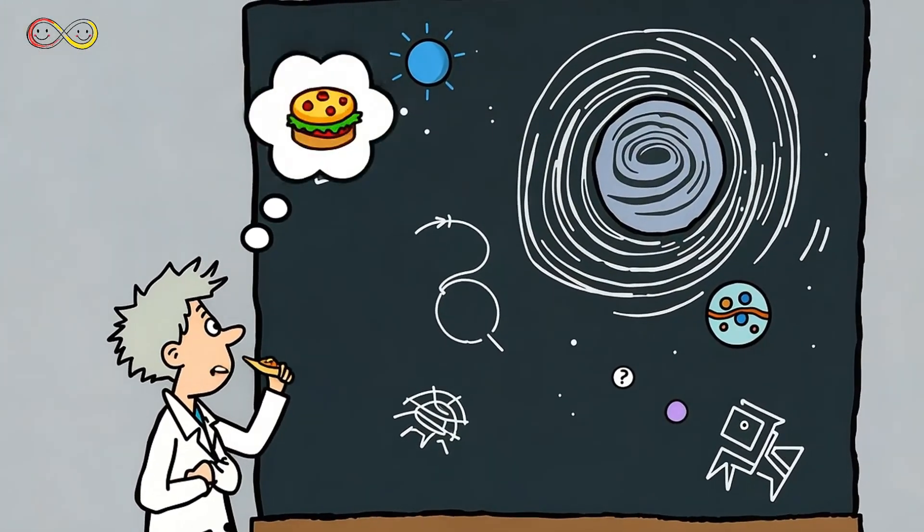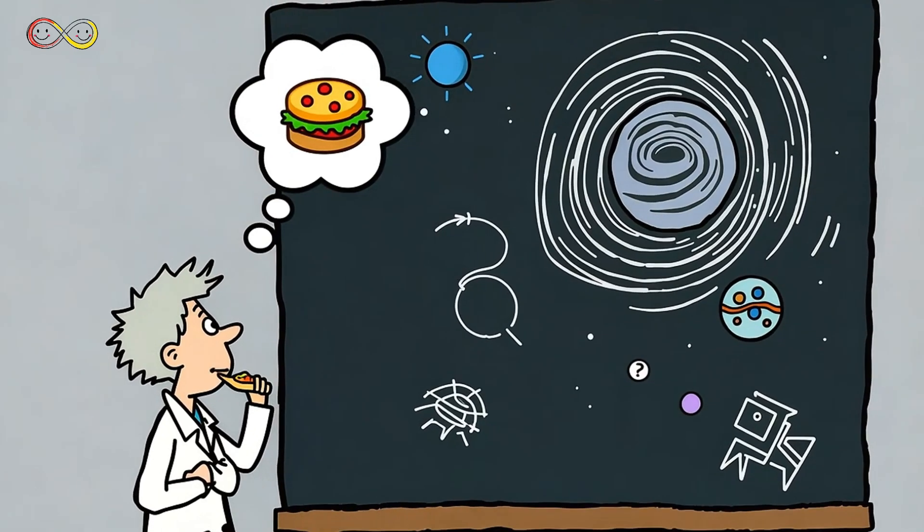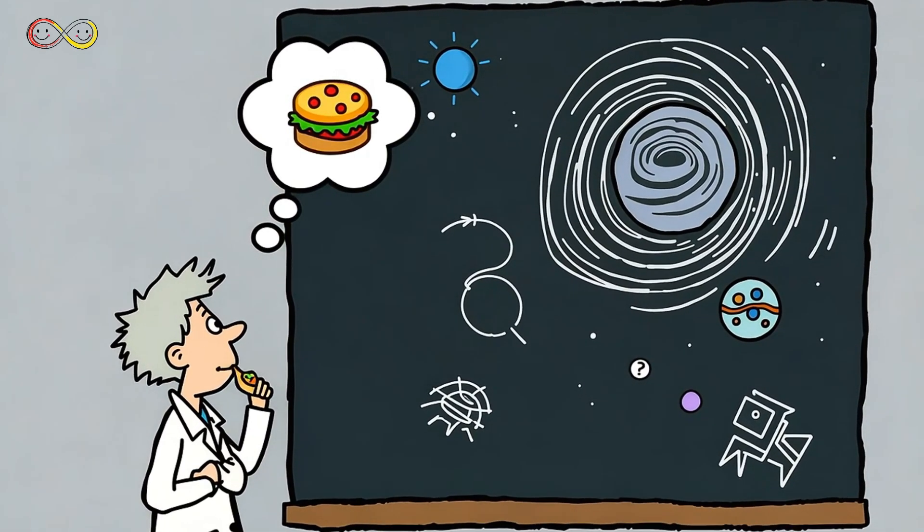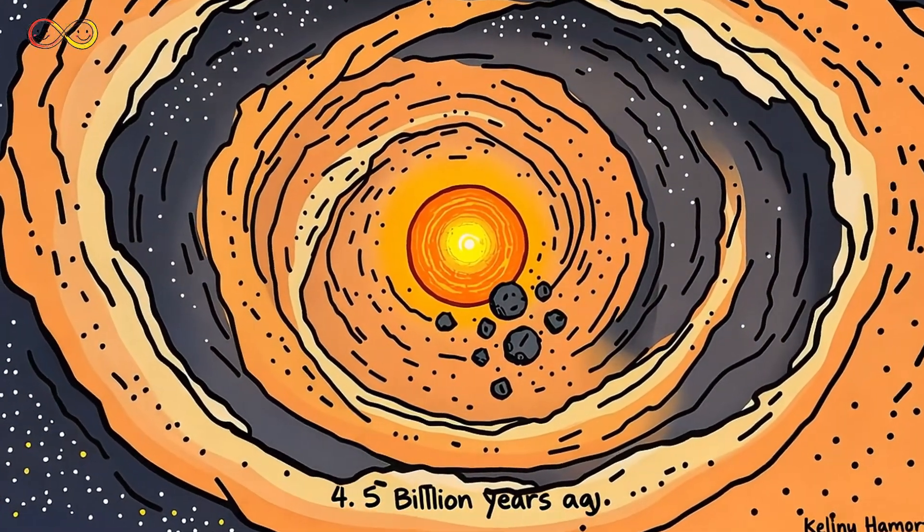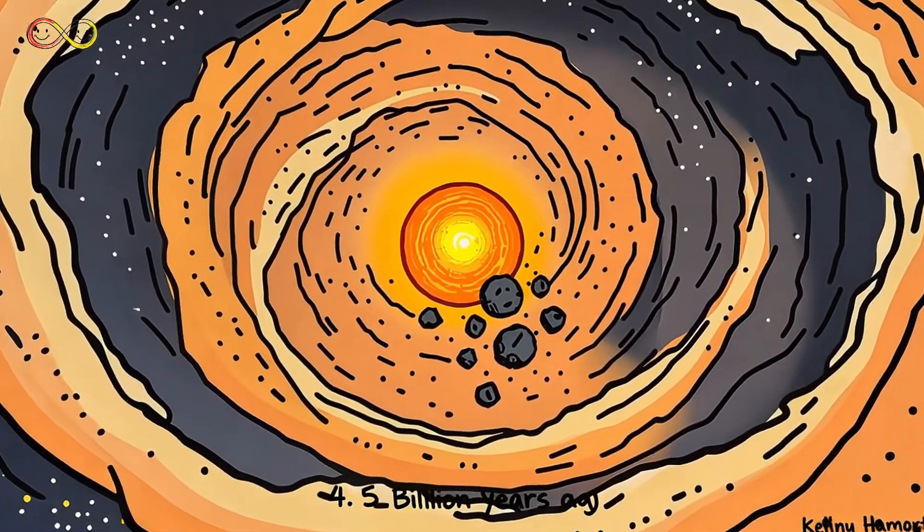Now that we know these celestial bodies exist, a big mystery remains. Where did they come from? Were they once a planet that broke apart? Or are they leftovers from something much older? To understand where asteroids come from, we have to go back, way back, over 4.5 billion years ago.